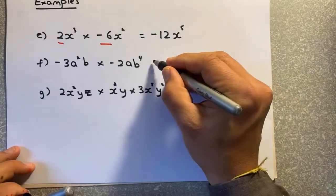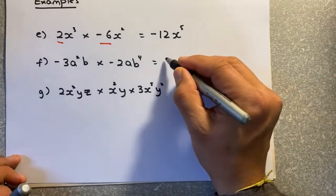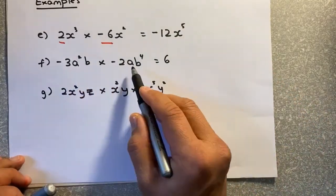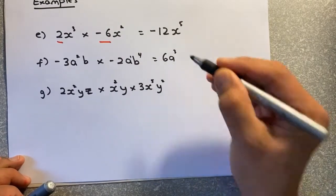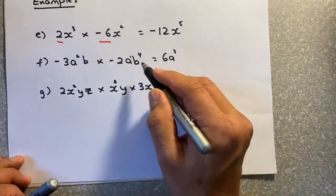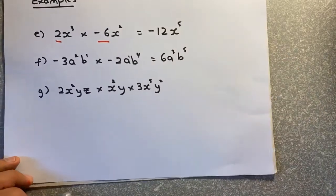Next example. Have a go. Minus 3 times minus 6. What do you think the answer is going to be? It's positive 6. a squared and a, that's 1 here. So 2 plus 1 will give you a cubed. b and b4, 1 plus 4 will give you b5. Simple, isn't it?